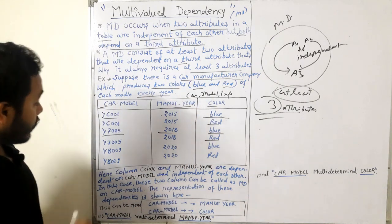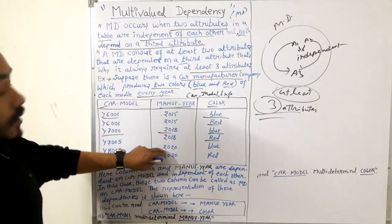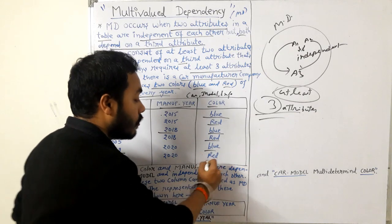Similarly Y8009 is being manufactured in 2020 and two variants of colors are there: blue and red.